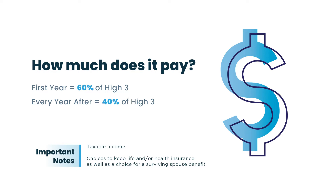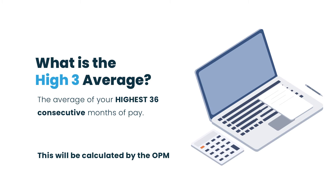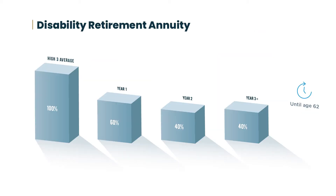The benefit is calculated based on your high-three salary. In the first year that you're receiving disability retirement, you're going to receive 60% of your high-three salary, and then each year after that, you'll receive 40% of your high-three salary. It's important to know that this is taxable income. You also get options to keep life or health insurance, as well as a survivor's annuity for a spouse. Your high-three average is the average of your highest 36 consecutive months of basic pay, including locality, calculated by OPM once approved.